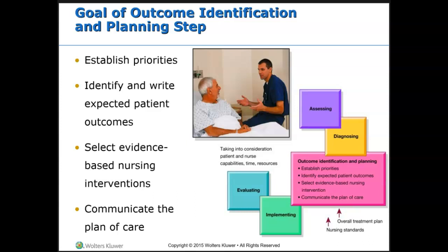During the planning phase of the nursing process, the nurse works with the patient, other health care team members, and the family to figure out what problems are priority, identify what outcomes or goals the patient wants to achieve and document those, select correct evidence-based practice nursing interventions, and communicate the plan of care with the patient, family, and every other health care team member.